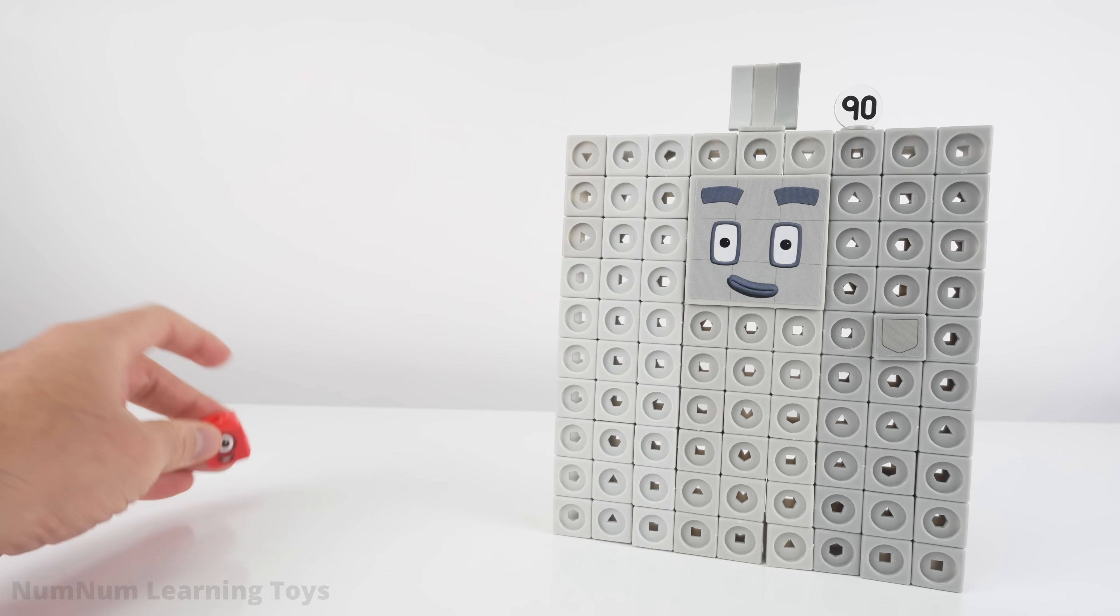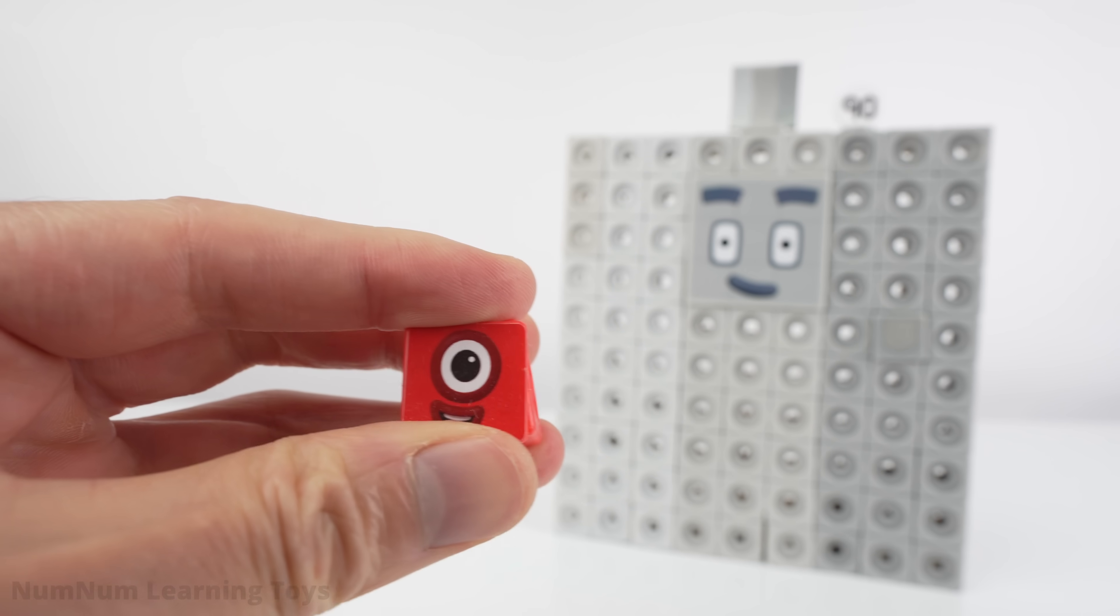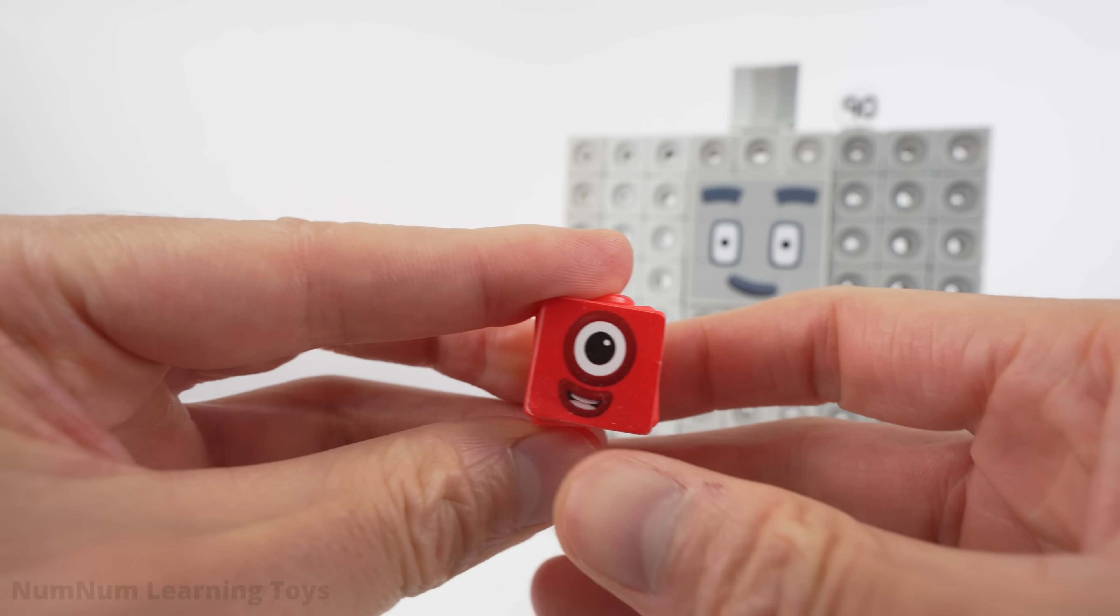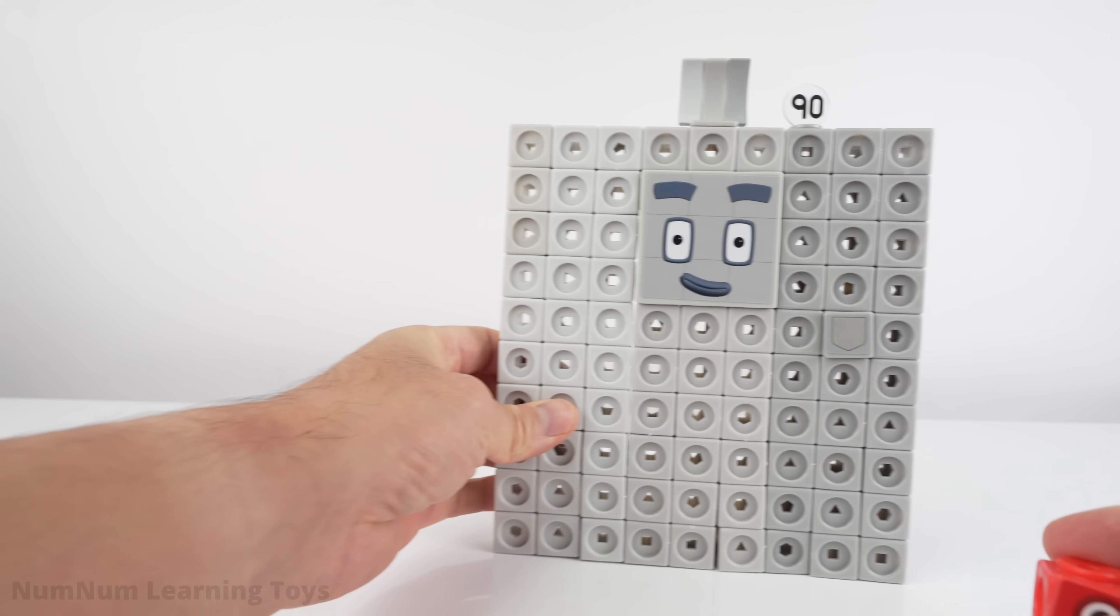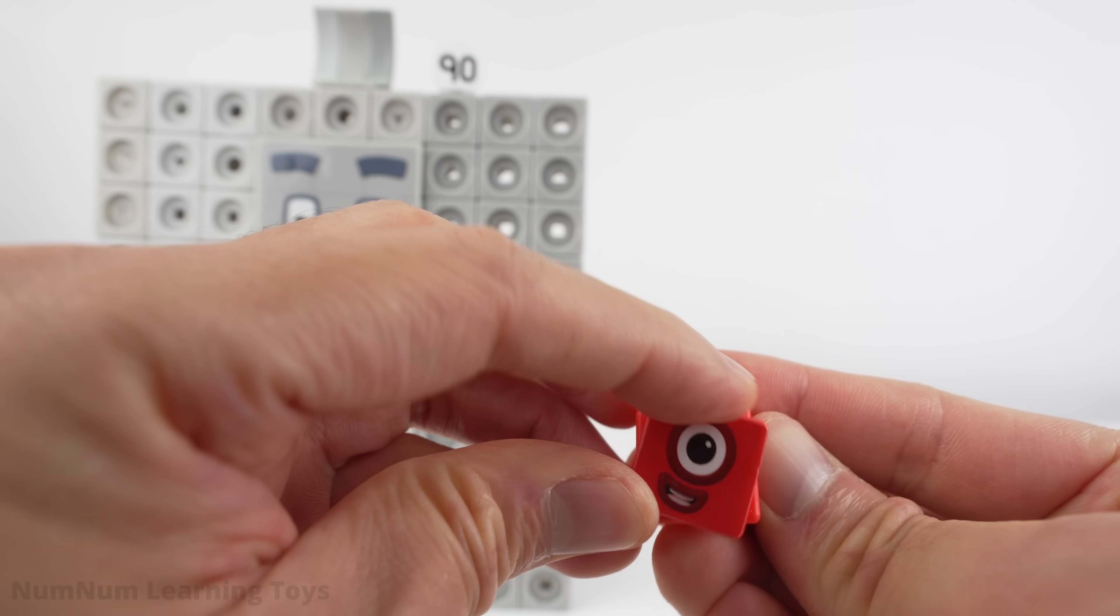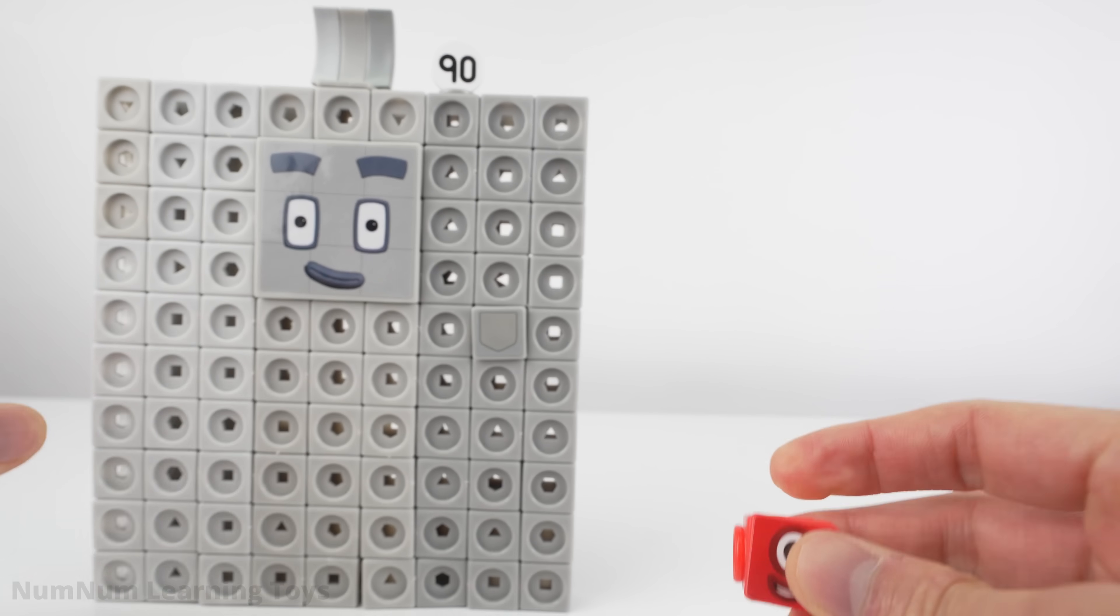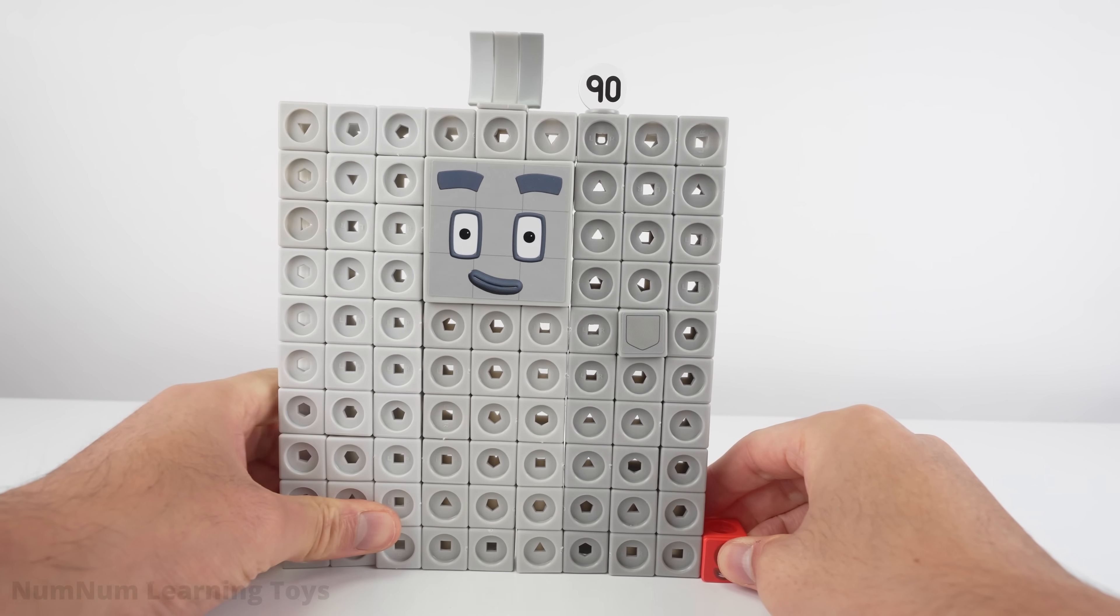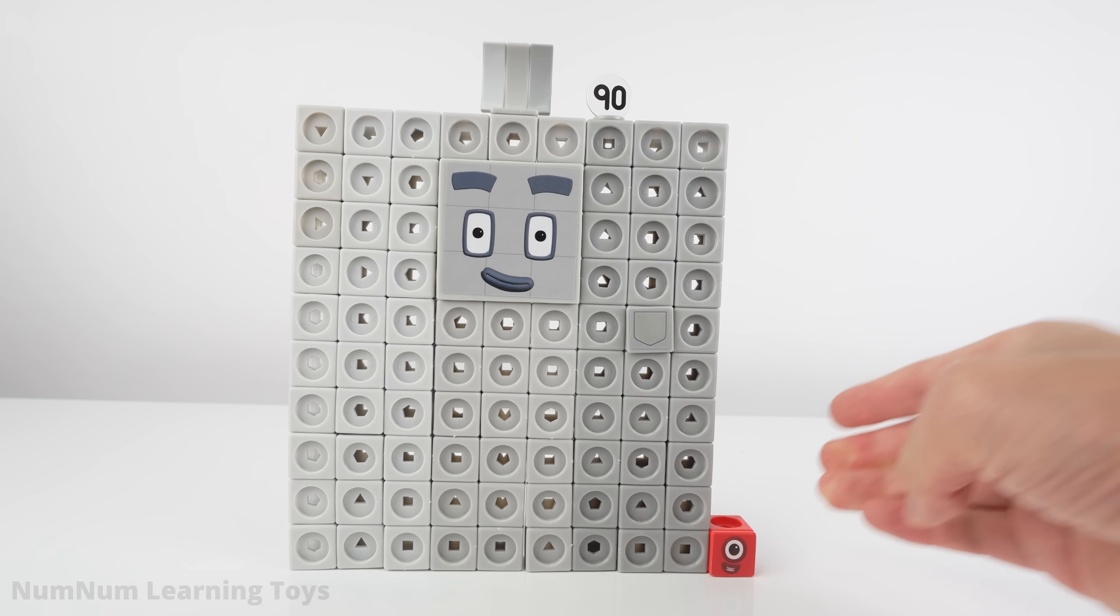There's only one square left. It's one. One is one unit tall and one unit wide. It's time to add the final square to our number. One plus ninety gives us what number? One more than ninety is ninety-one. Ninety-one!